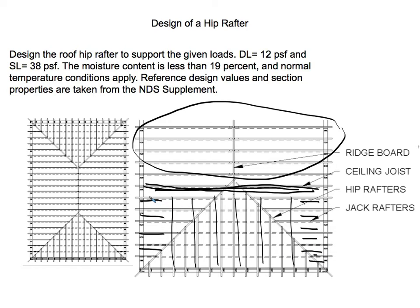The roof wants to become flat, so there's thrust going outward. What's preventing displacement is a beam in the ceiling, which is in tension and picks up that load. There might be hangers involved, so you'd have to design for withdrawal. On the other side the ceiling joists want to displace, and a double joist with blocking can help resist that.